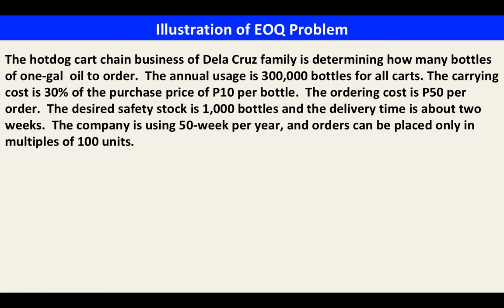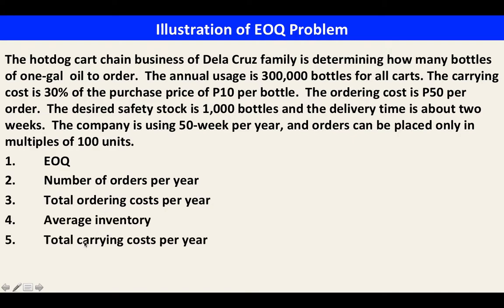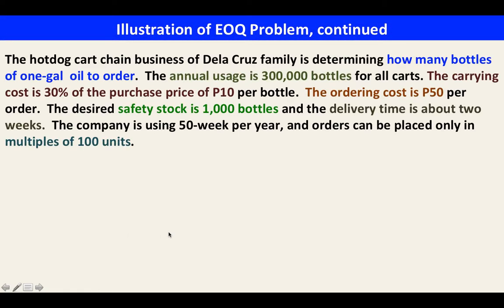We will be asked to compute: the EOQ, the number of orders per year, the total ordering cost per year, the average inventory, the total carrying cost per year, the total cost, and the reorder point.